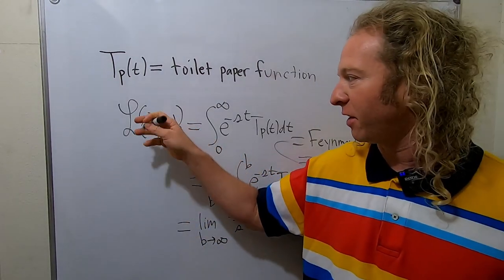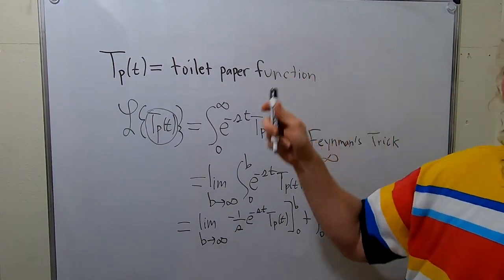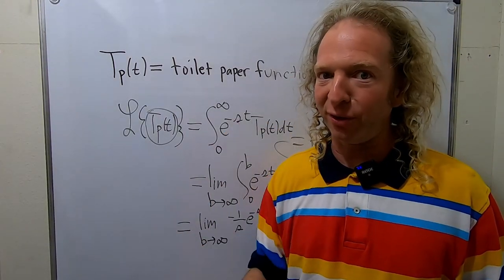This means that this function is bigger than an exponential function. It grows without bound. So we need an infinite amount of toilet paper to kill the coronavirus.